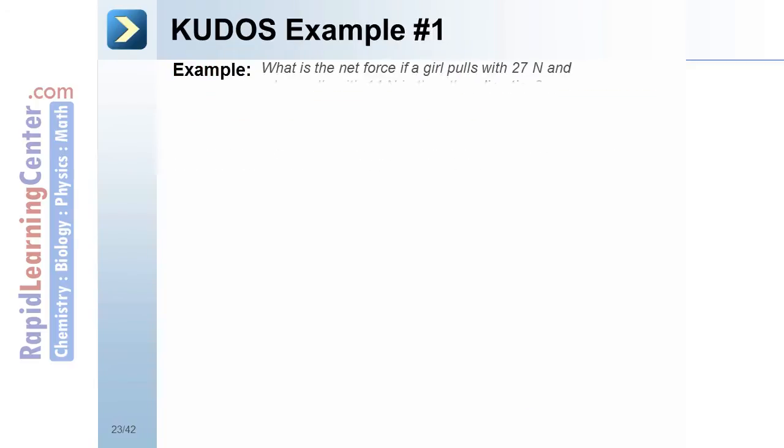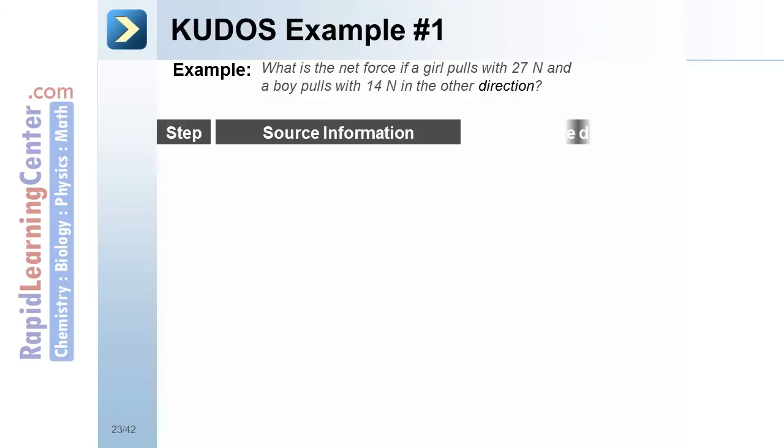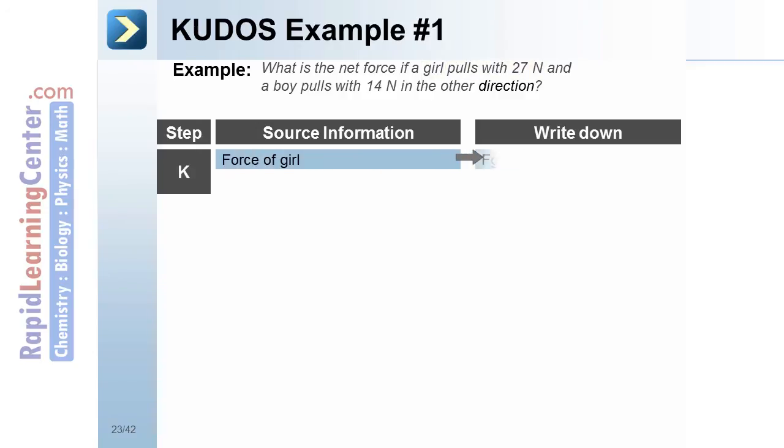KUDOS example number one. What's the net force if a girl pulls with 27 newtons and a boy pulls with 14 newtons in the other direction? Step one, the known. They tell us the force of the girl, the force of the boy in the opposite direction.